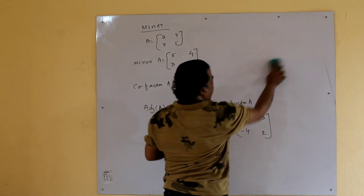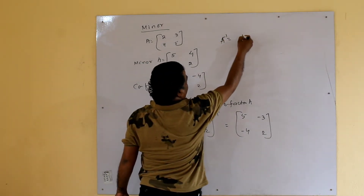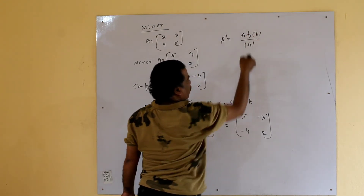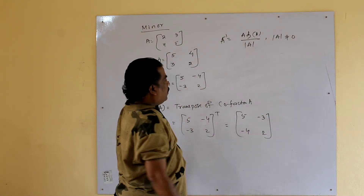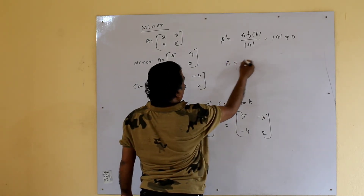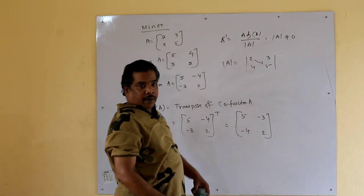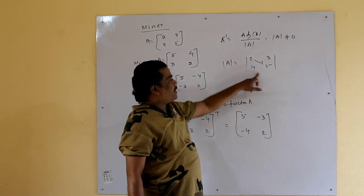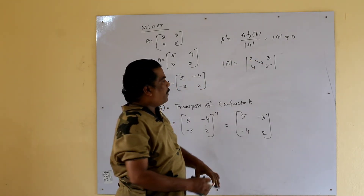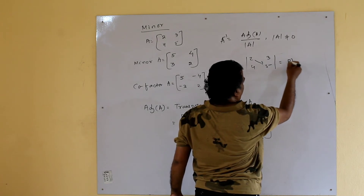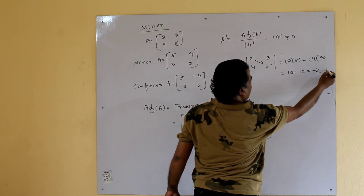Now we find the inverse of the matrix. A inverse is defined as: A inverse = adjoint A divided by the determinant value. For A = [2, 3; 4, 5], the determinant value is the product of diagonal elements minus product of off-diagonal elements, that is 2×5 minus 4×3 = 10 minus 12 = minus 2, which is not equal to 0.